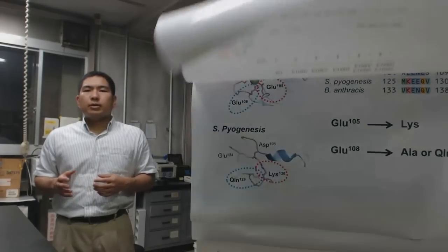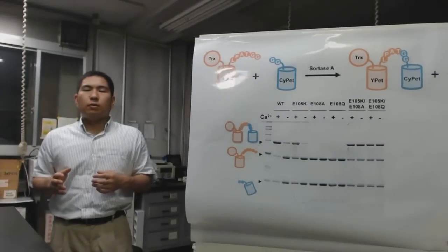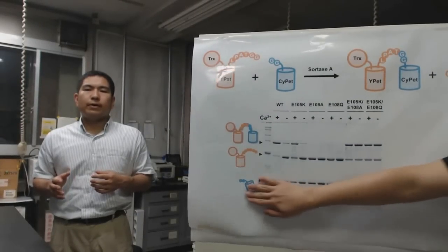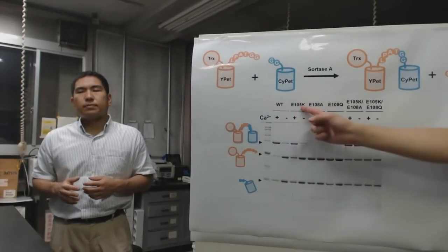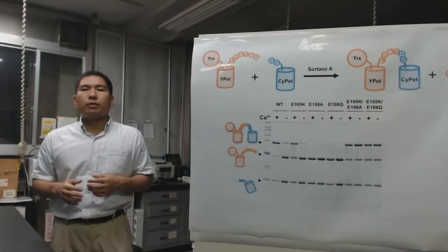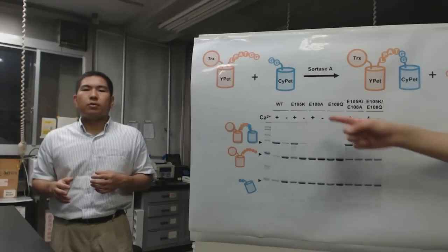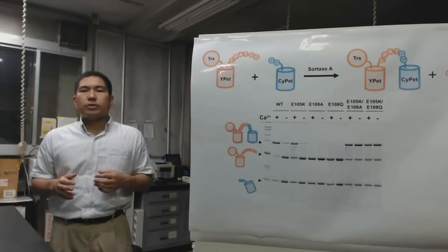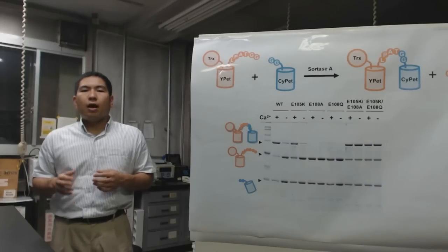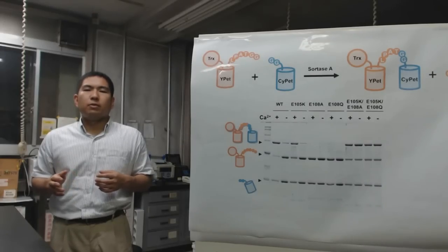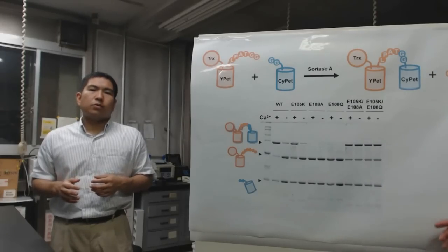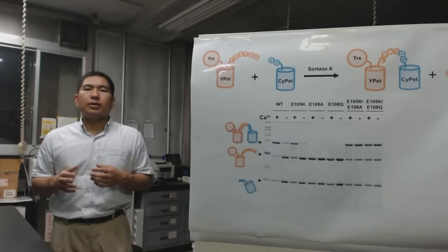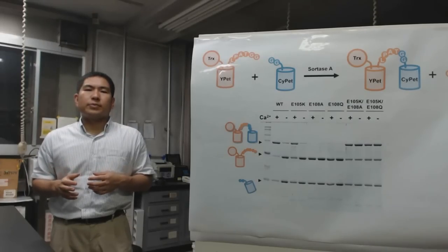The mutations of glutamate 105 did not affect calcium dependency. However, the activities were very low. So we failed to get calcium-independent sortase A by single mutations.